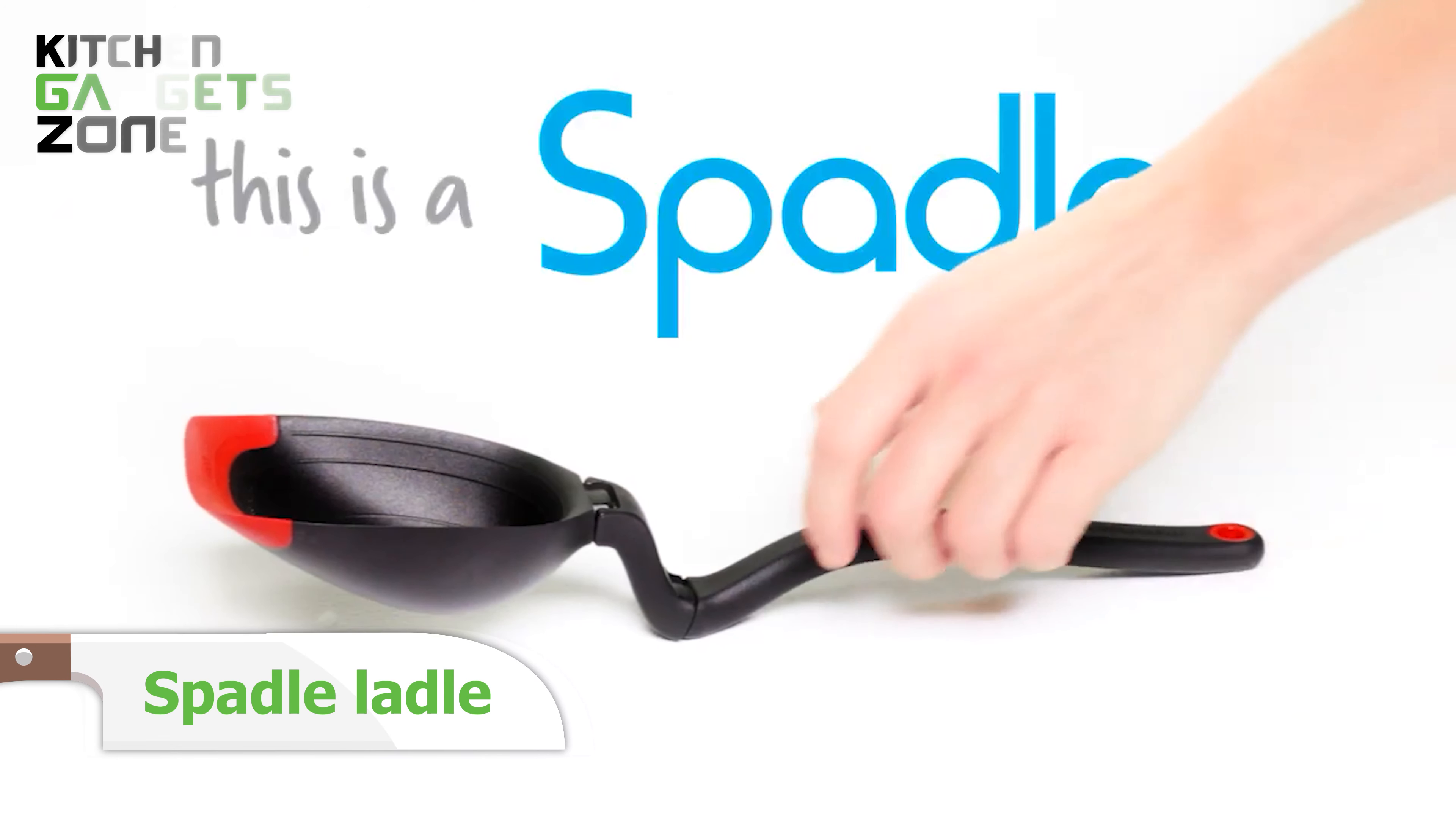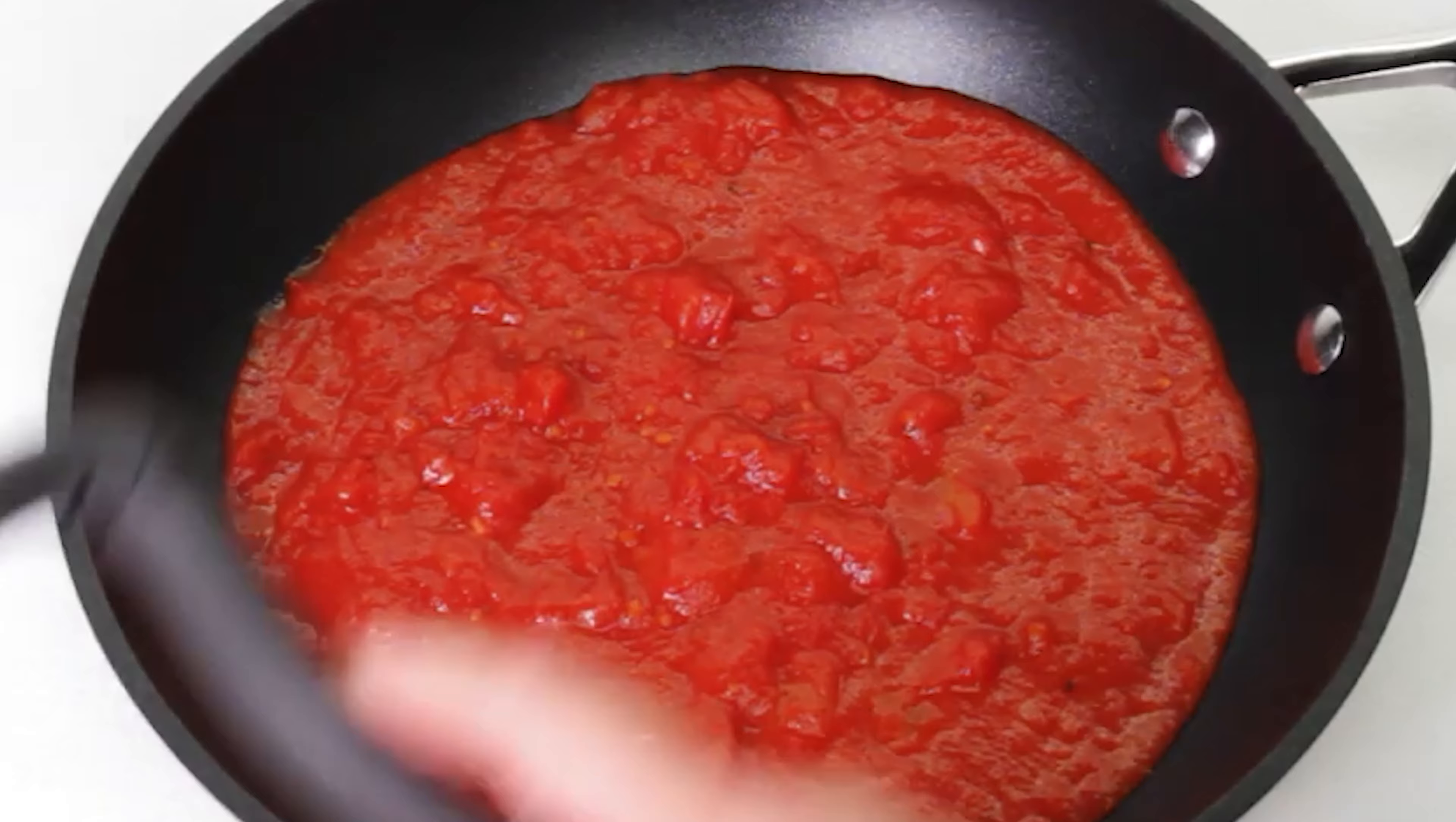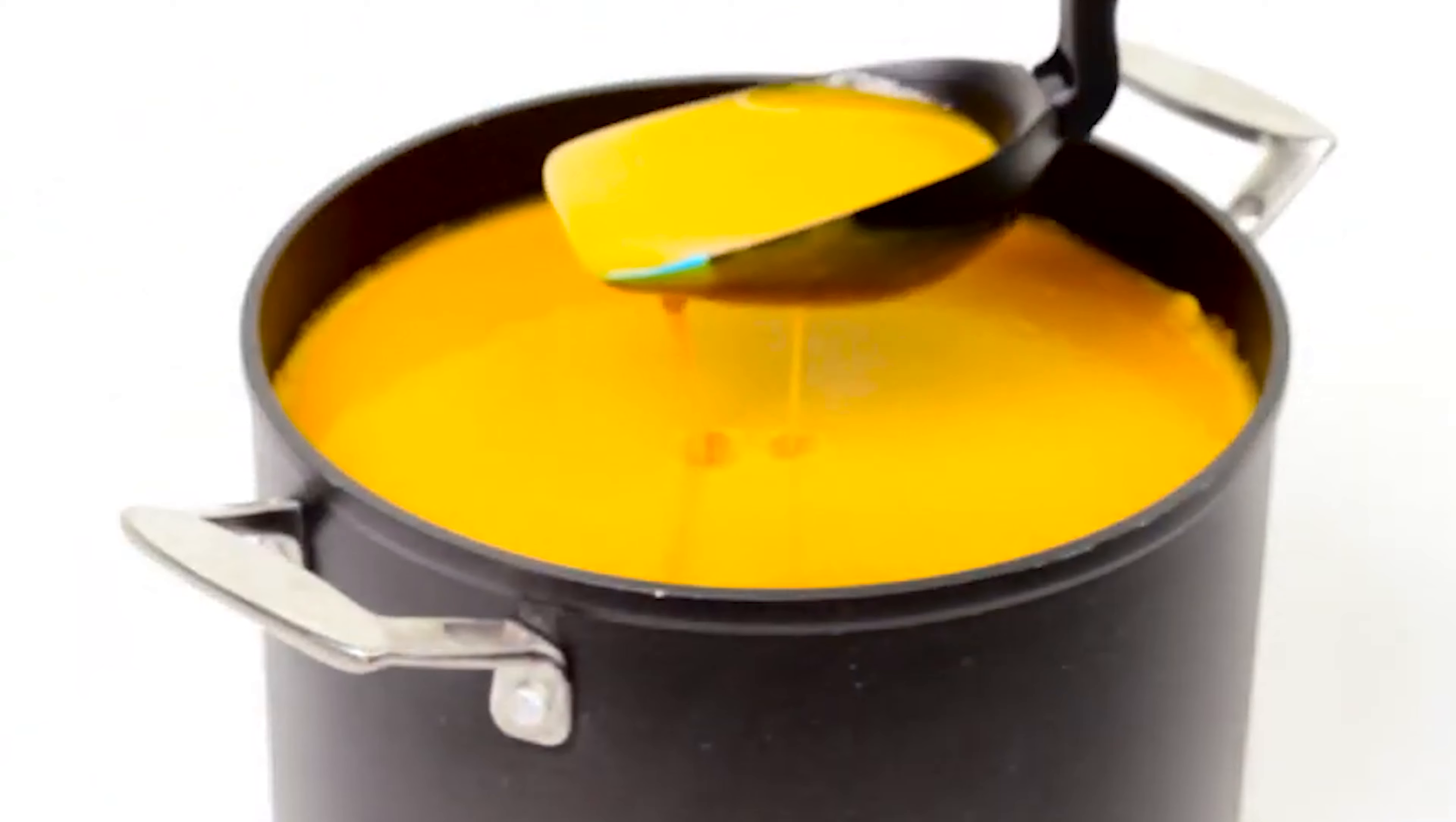Introducing the Spadle, the ultimate cooking and serving utensil. This ingenious gadget's handle twists to transform it from a versatile cooking spoon for shallow pans into a deep serving ladle perfect for pots and bowls. The flexible silicone scraping tip allows you to scrape out every last piece of food from your cookware, safe for use on non-stick surfaces and heat-resistant up to 260C-500F.